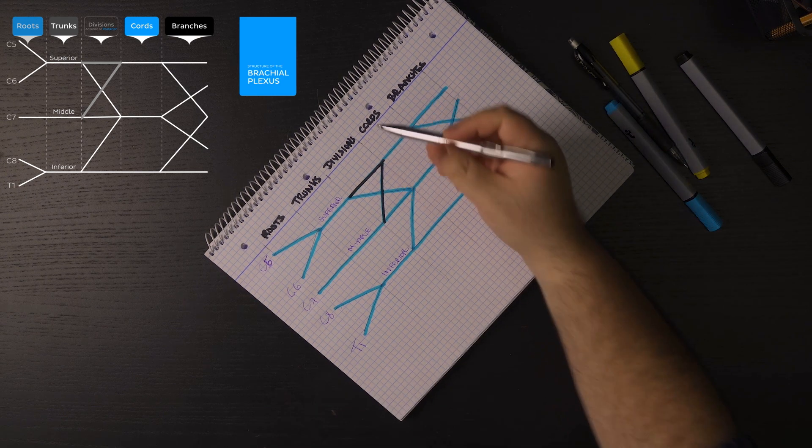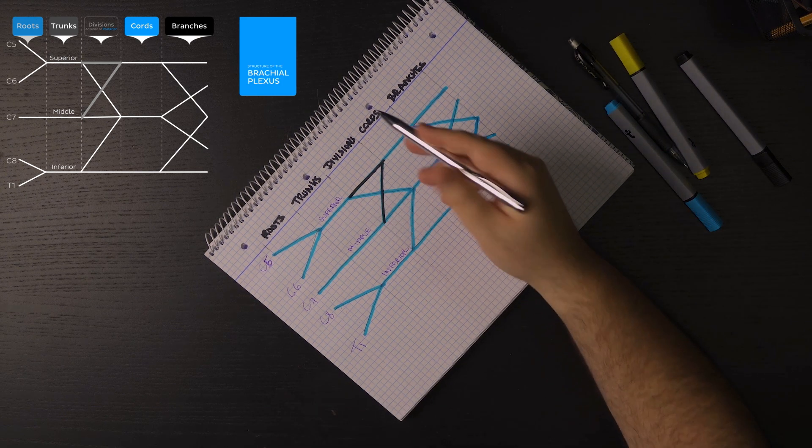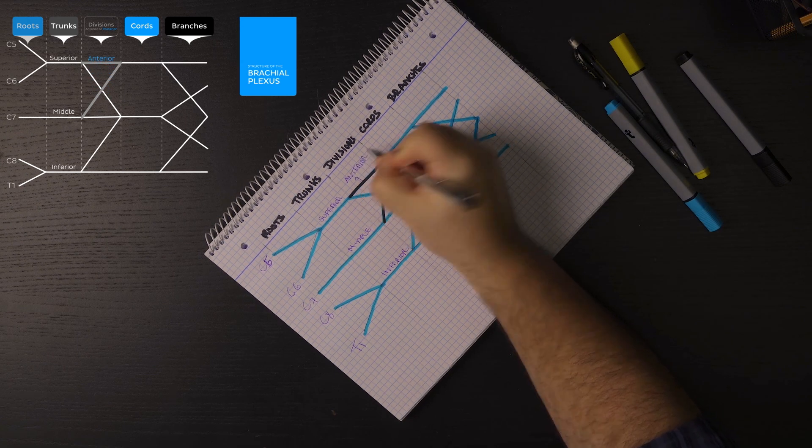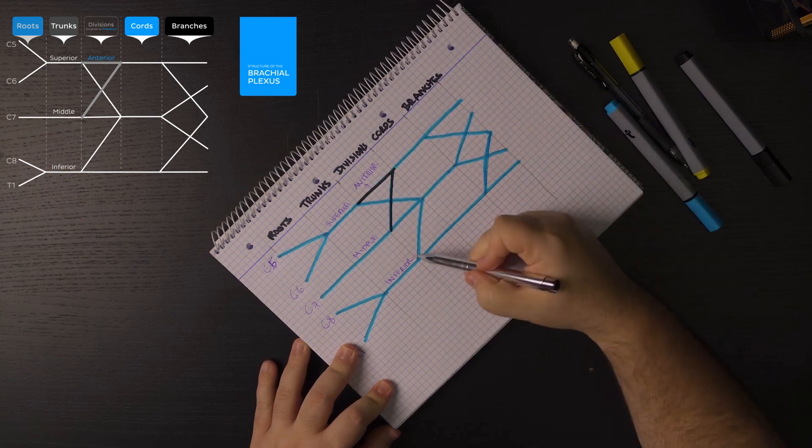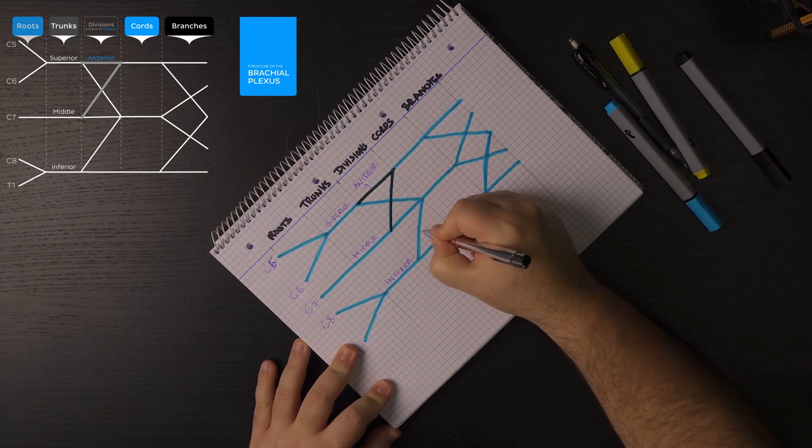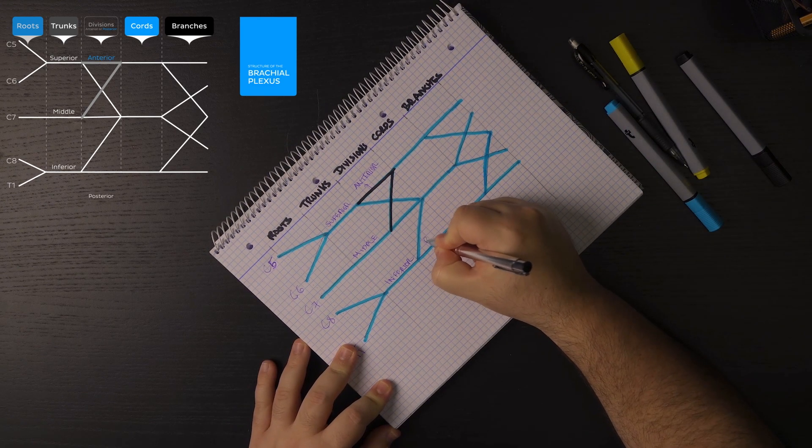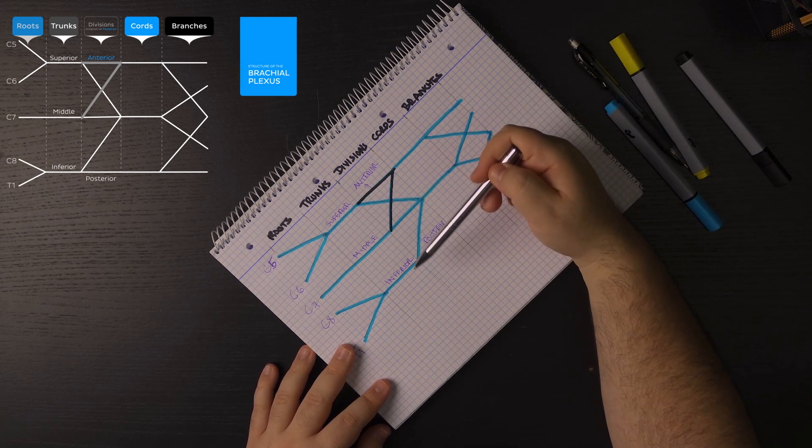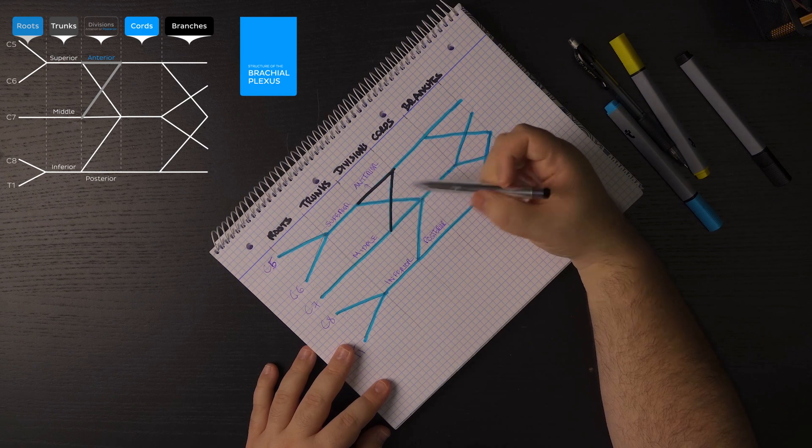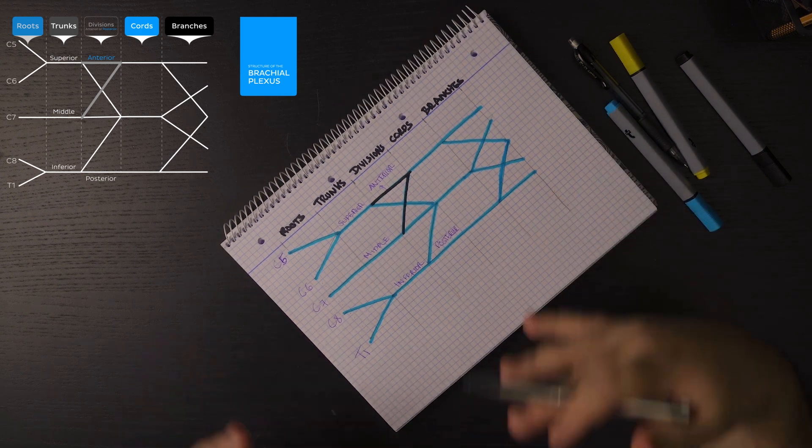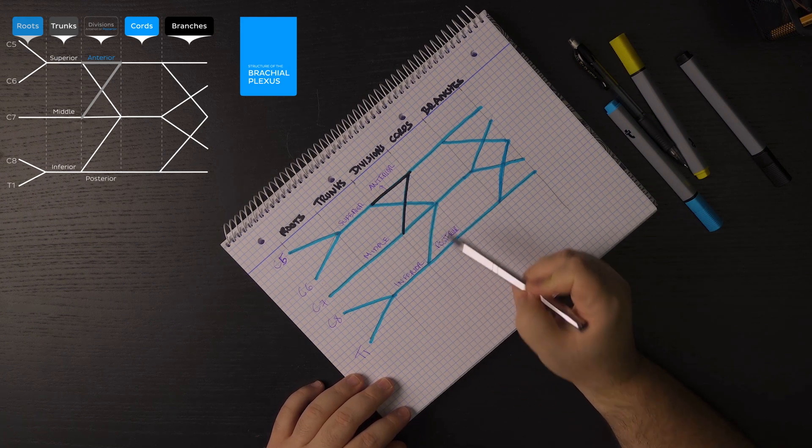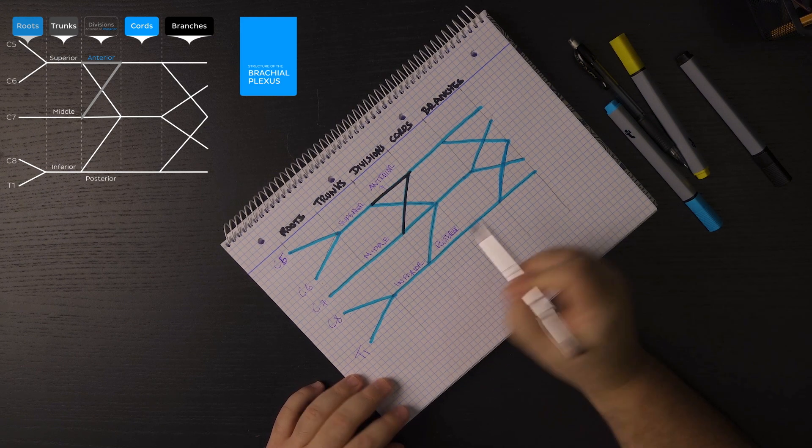Like I mentioned here before, the black lines here are representing the anterior division. While these here, these blue lines are representing then the posterior division. Just remember, an easy way to remember this is that we start from, let's say, superior or front. So superior, anterior, middle, in the middle, as you can see, and then inferior and posterior.